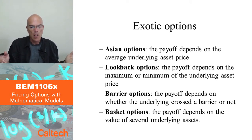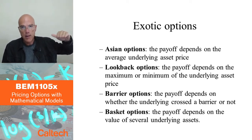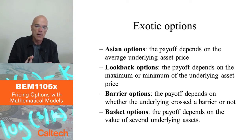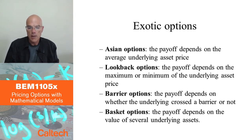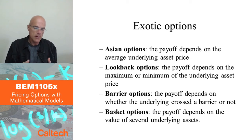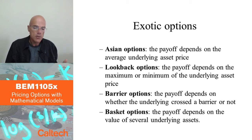Is a barrier call option more expensive or less expensive than a standard call option? It's going to pay zero in more cases than a regular call option because it's going to pay zero if the stock price doesn't reach the barrier, even when the call option would pay something. So it's going to be less expensive, and this is the reason why they are popular. If you are pretty sure that a stock will reach a barrier, it's cheaper to buy a barrier call option rather than a standard call option. The probability of hitting the barrier will be incorporated into the price, but if you have better information or just don't have enough money, barrier options are cheaper.